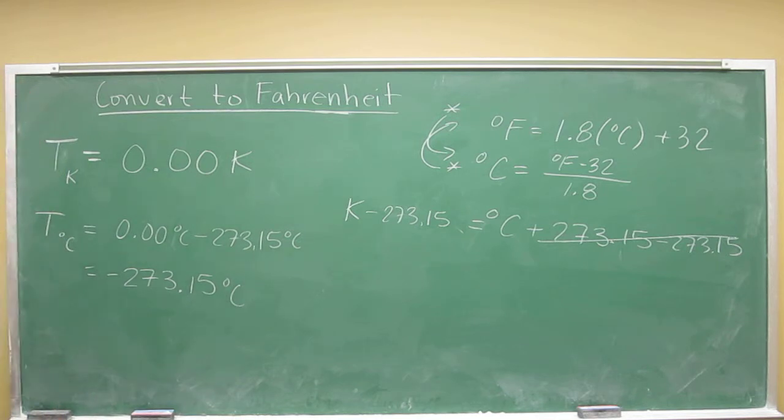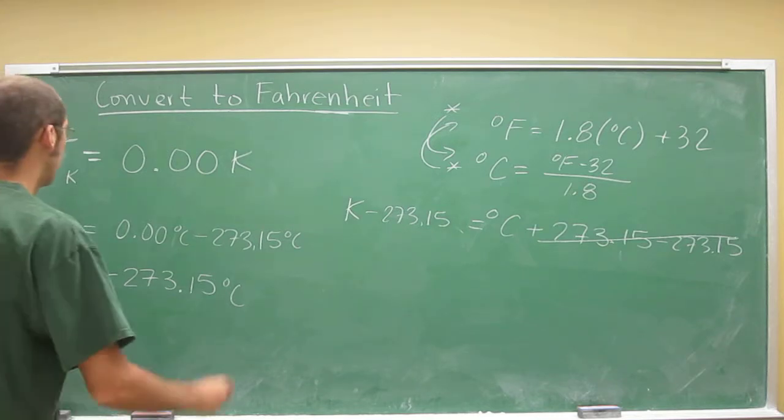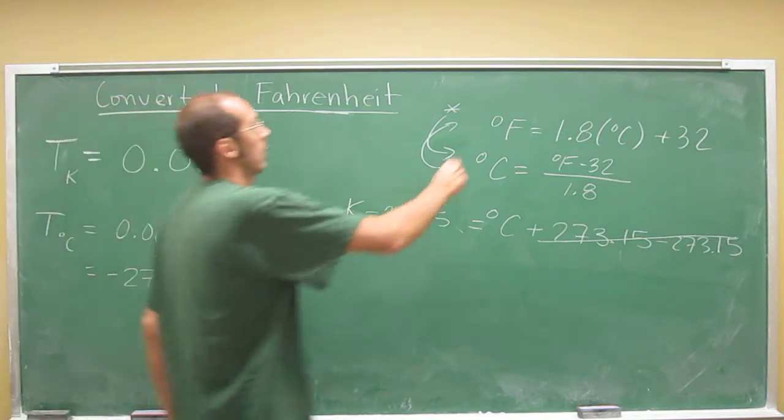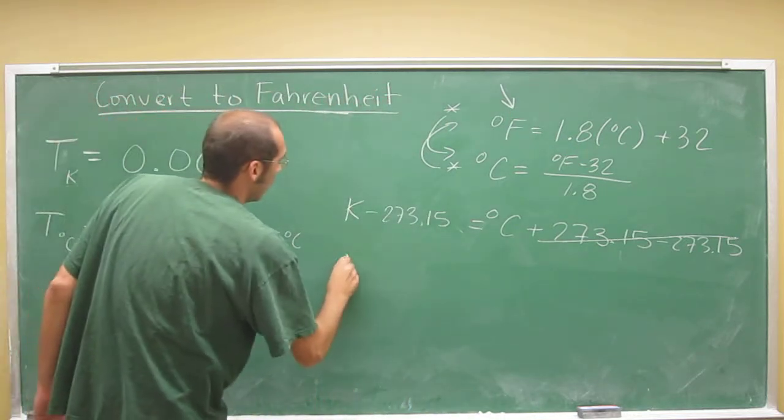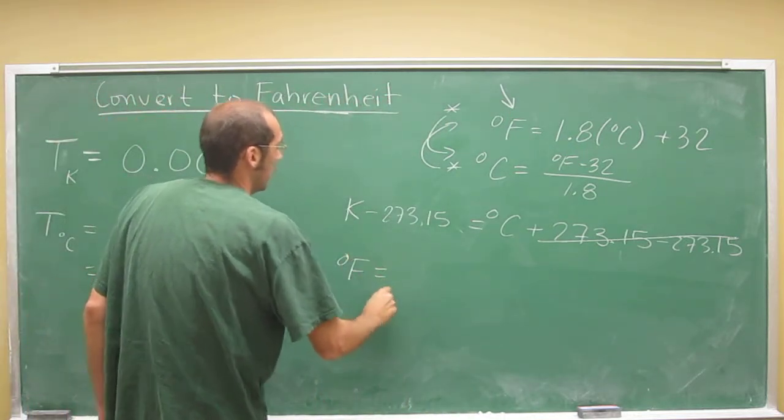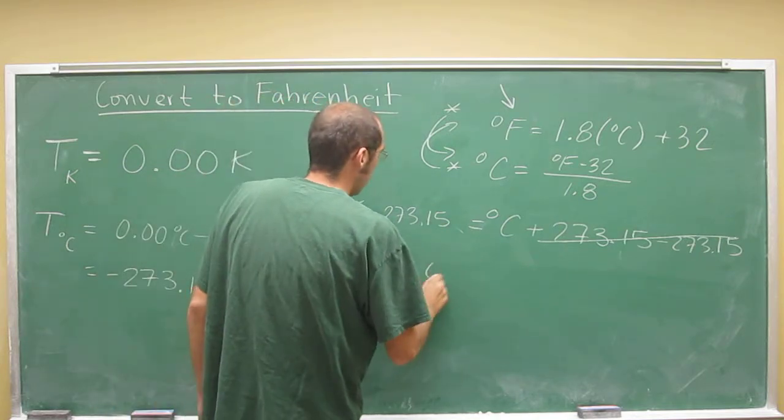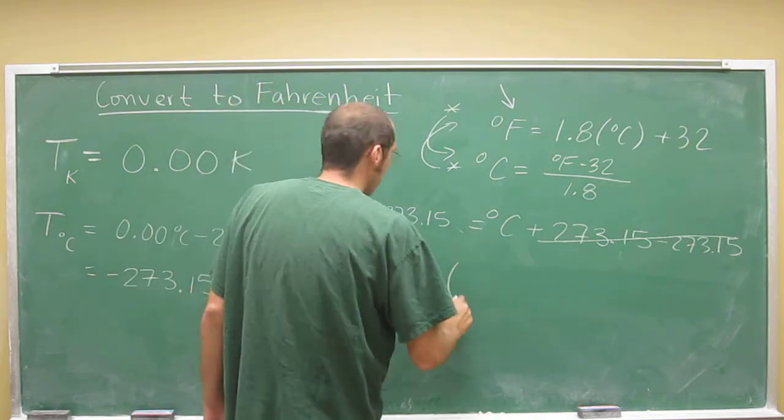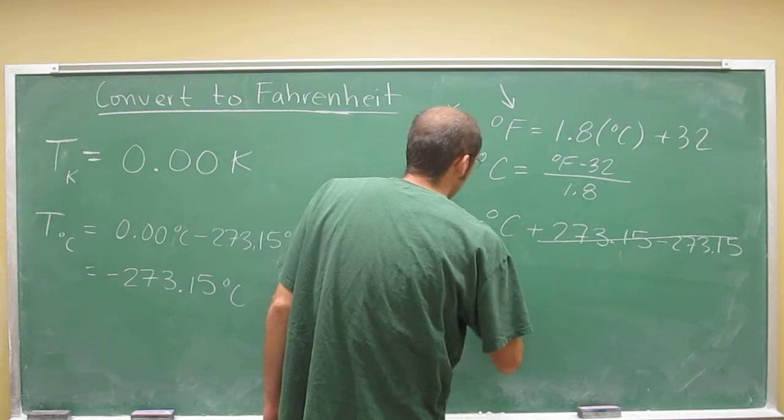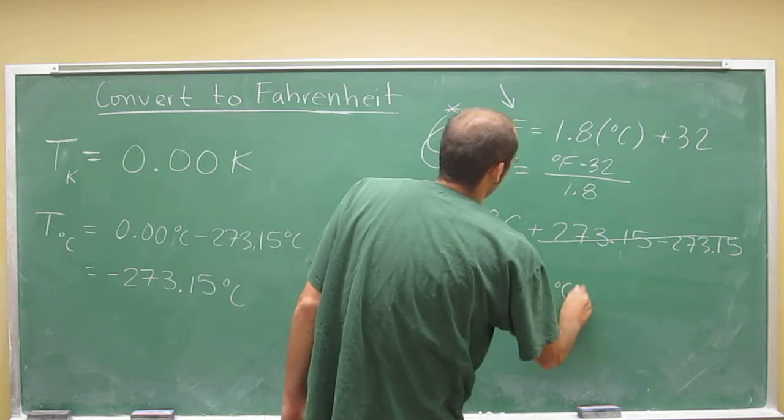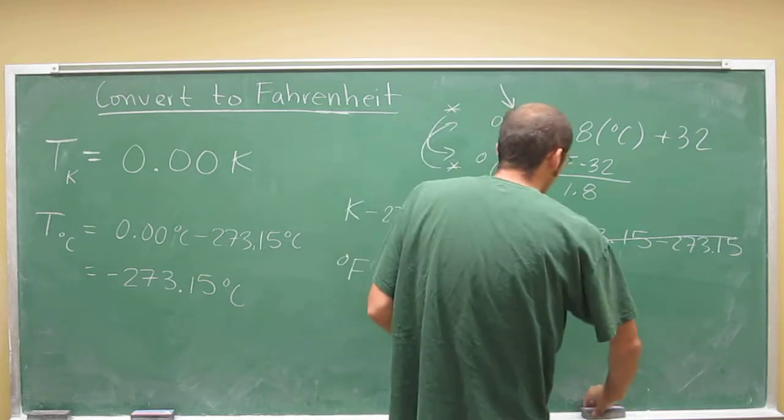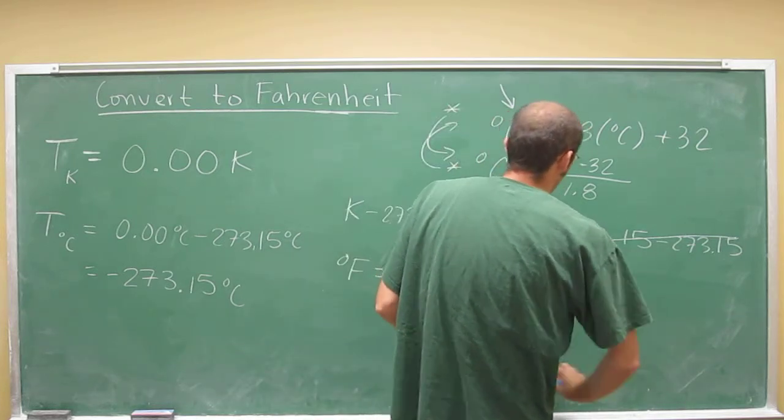And we've got two digits after the decimal place. So this is our new Kelvin and we want to convert that to Fahrenheit. Right? So we use this one up here.